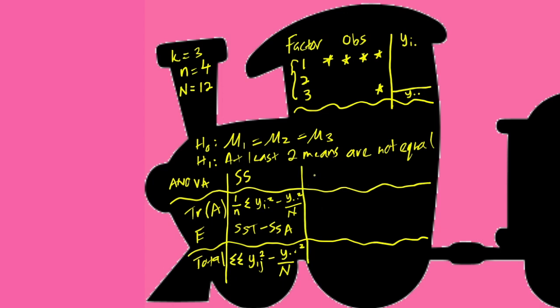Next would be the calculation of the degrees of freedom. So, the degrees of freedom of the treatment would be K minus 1. Degrees of freedom of the error would be N minus K. And the degrees of freedom of the total would be this value plus this value or N minus 1.